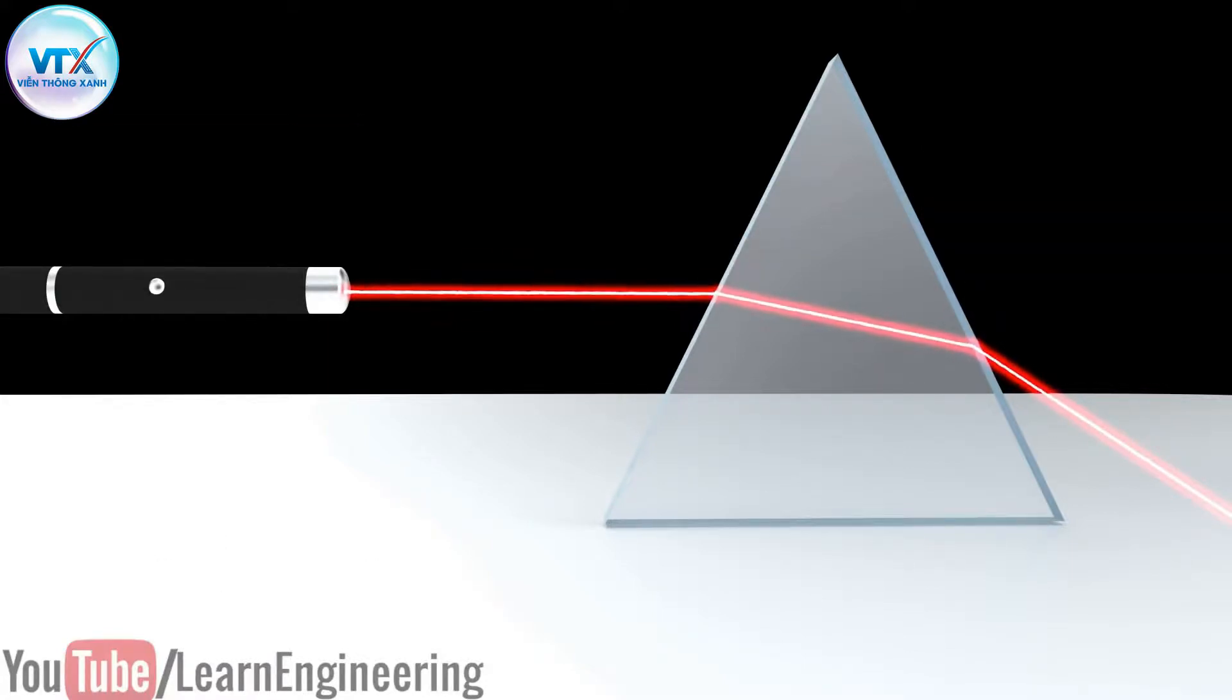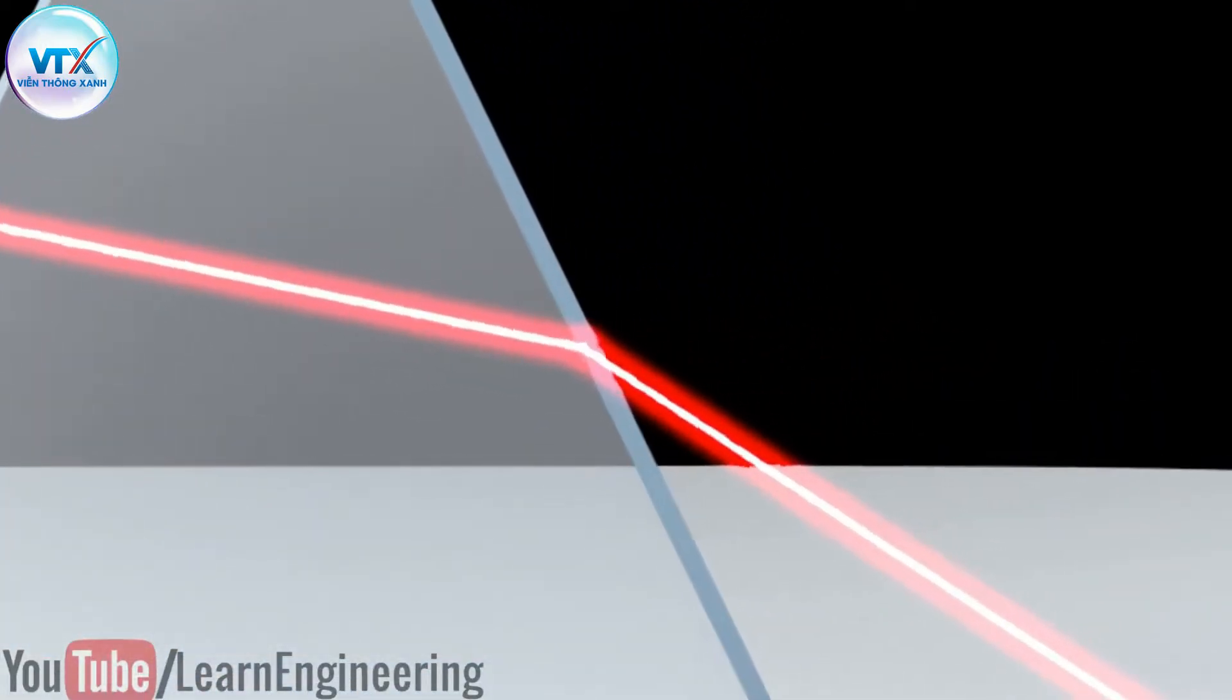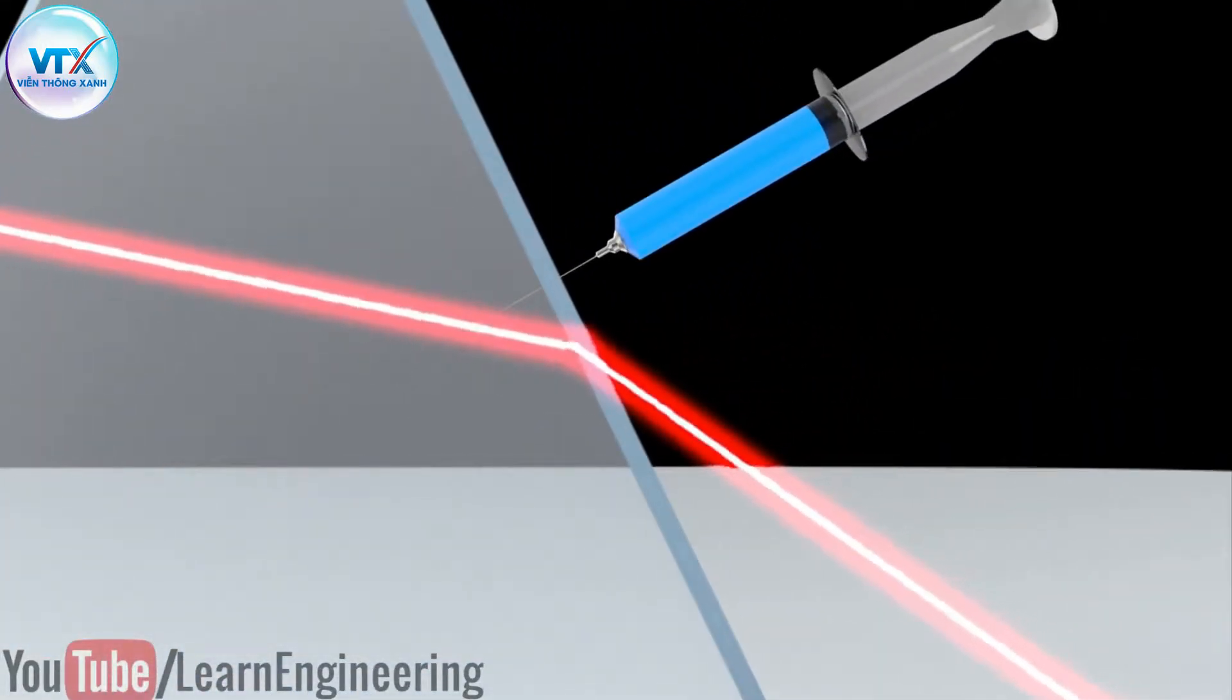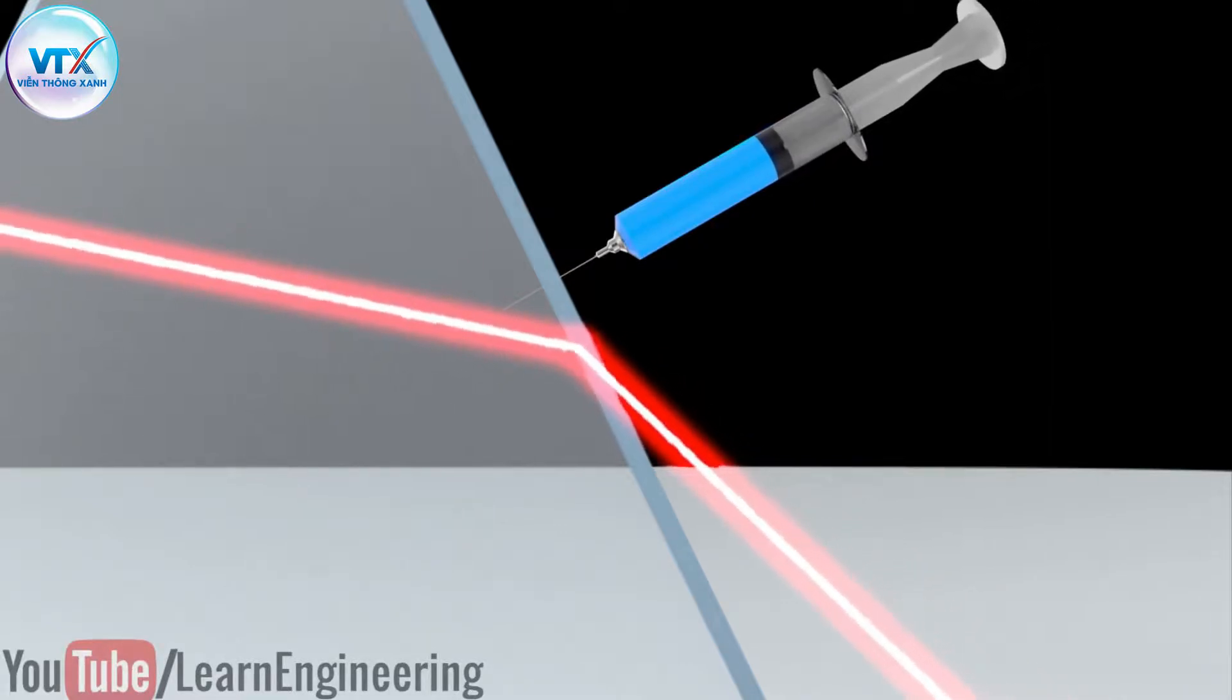Now let's make this experiment a hypothetical one. Using some dopants we are able to increase the refractive index of the glass in real time. As we increase the refractive index, the light will bend more and more towards the surface.